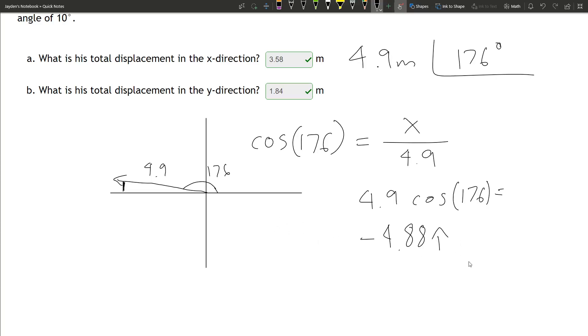Now we do sine. We can do the same thing for sine. Sine of 176 is equal to the y value over the hypotenuse, which is 4.9. Multiply it over, so it would just be 4.9 times sine of 176. It'd be 0.342j. That's our first vector.